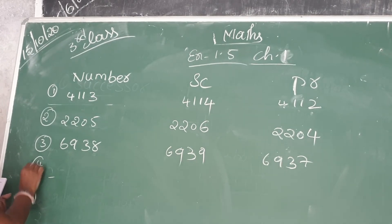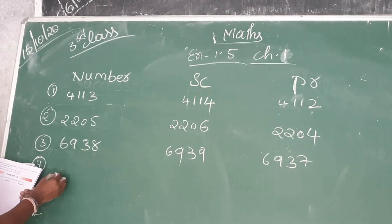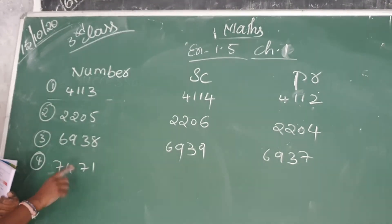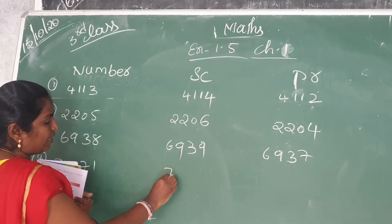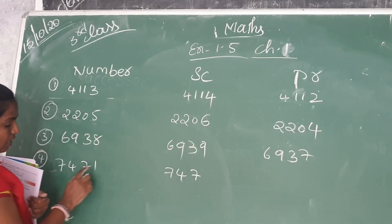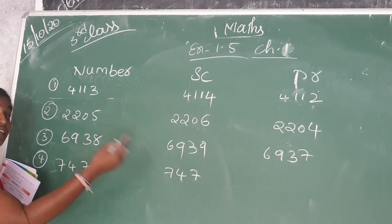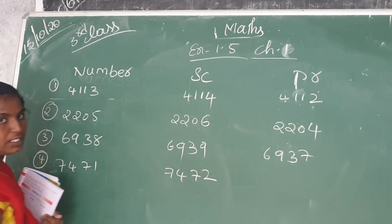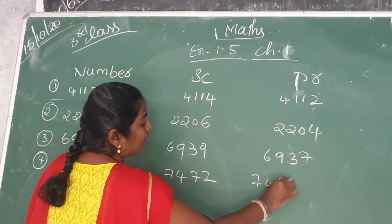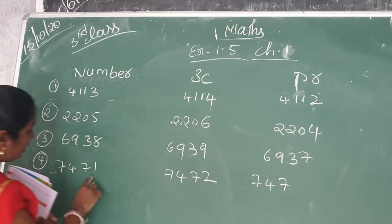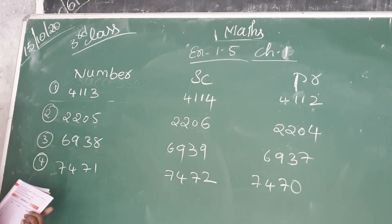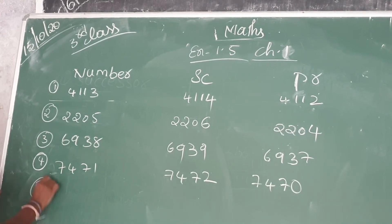Next, fourth one: 7471. Successor means after number — 7471's after number, 71's after is 72, so the successor is 7472. Predecessor means before number — 7471's before number, 71's before is 70, so the predecessor is 7470. Ok? Predecessors and successors.